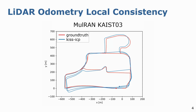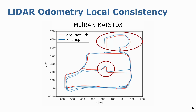Despite the global drift, modern day LIDAR odometry estimates exhibit local consistency. Here we see another sequence from the Mulran dataset recorded in a city environment, looping over the same area multiple times. Despite the increasing global misalignment, local consistency is evident. Even at places where the recording platform takes sharp turns or goes through a long curve, the local shape of the trajectory is captured convincingly by the odometry estimates. We leverage this local consistency of LIDAR odometry estimates to detect loop closures for SLAM.